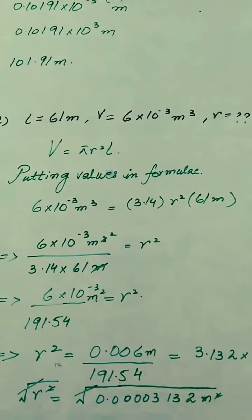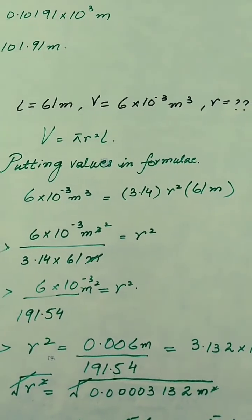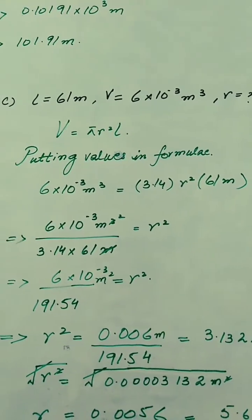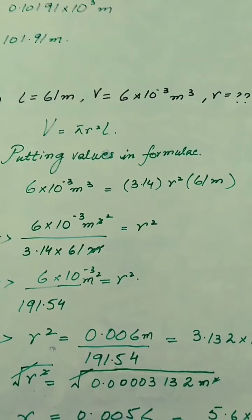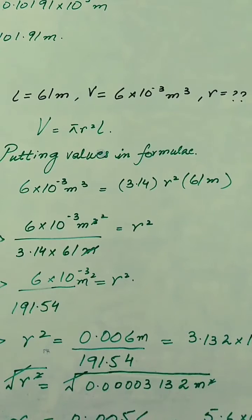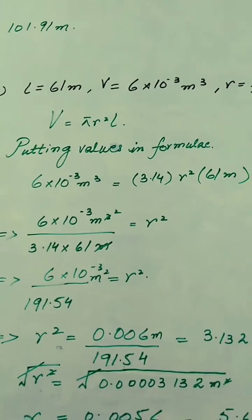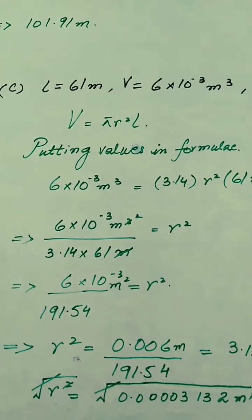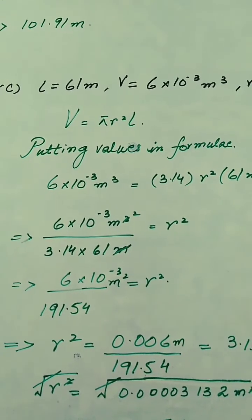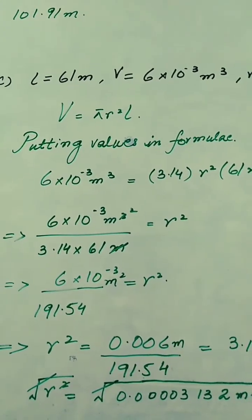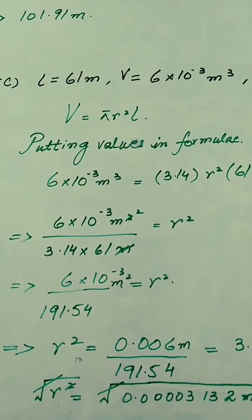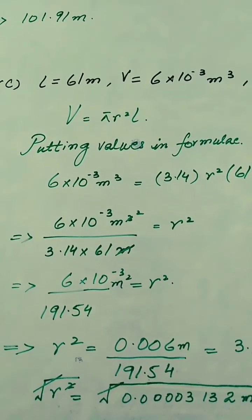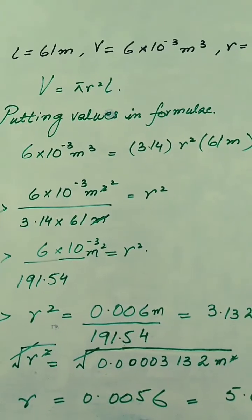Now for the third part: l = 61 m and V = 6×10⁻³ m³, and we have to find r. Substituting into the formula: 6×10⁻³ = 3.14 × r² × 61. Taking the right-hand side values over to divide on the left: r² = (6×10⁻³) / (3.14 × 61) = (6×10⁻³) / 191.54, giving r² = 3.132×10⁻⁵ m².